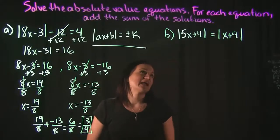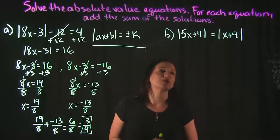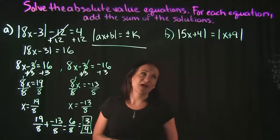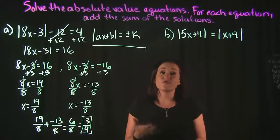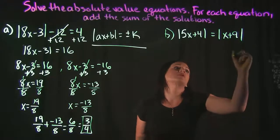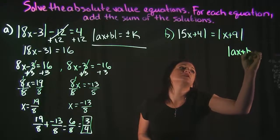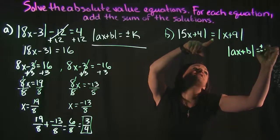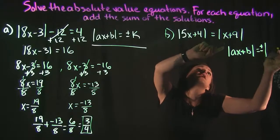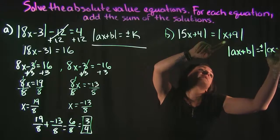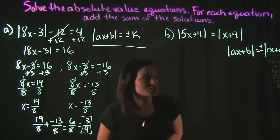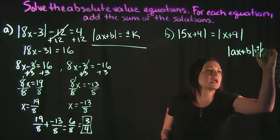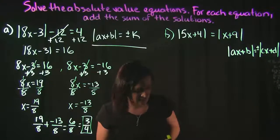Moving on to example B. Here I see an absolute value on either side of the equation: the absolute value of 5x plus 4 is equal to the absolute value of x plus 9. The formula for this setup is: take the absolute value of the left side (ax + b) and set it equal to the positive and negative version of the right-hand side (cx + d).